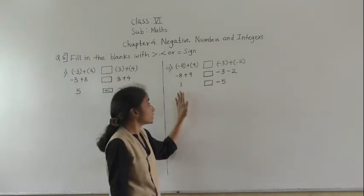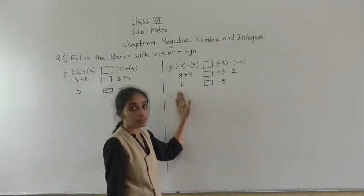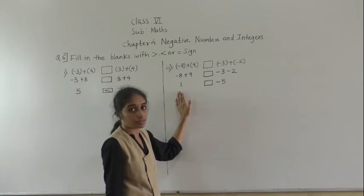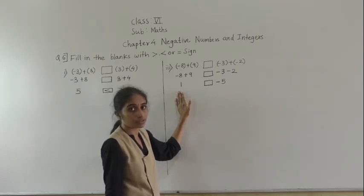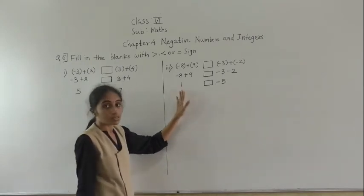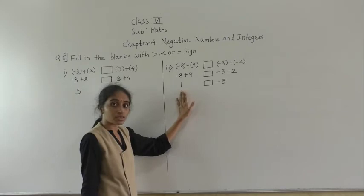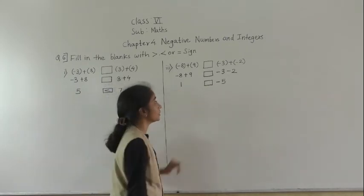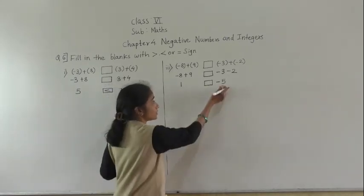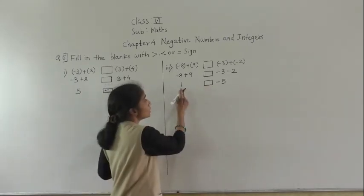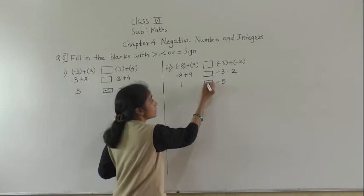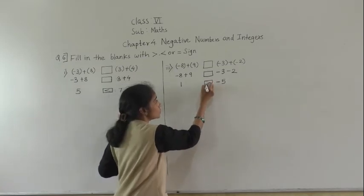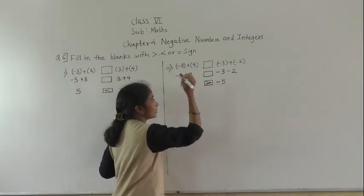Always a positive integer is greater than a negative integer. So comparing 1 and minus 5, the greater number is 1.